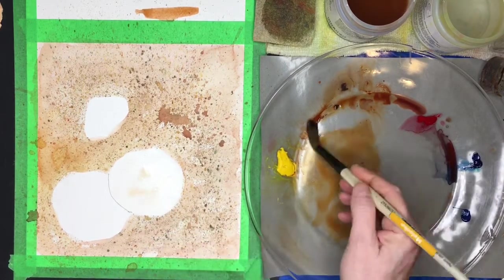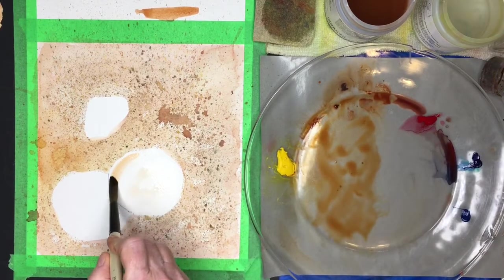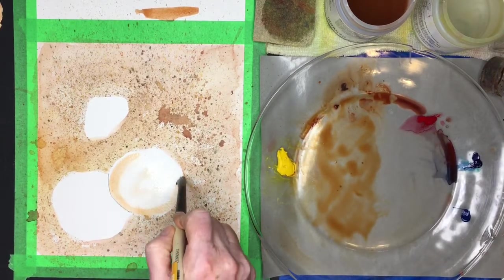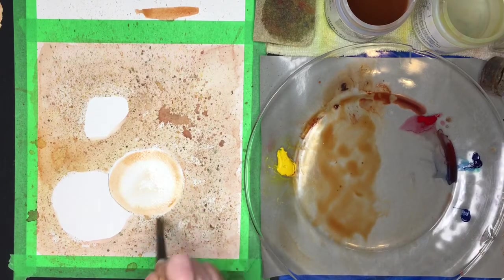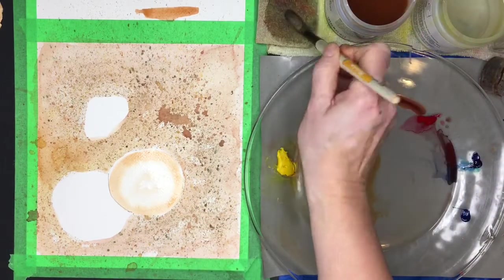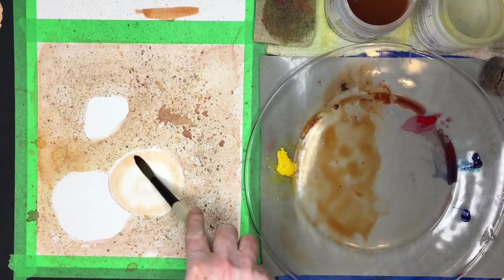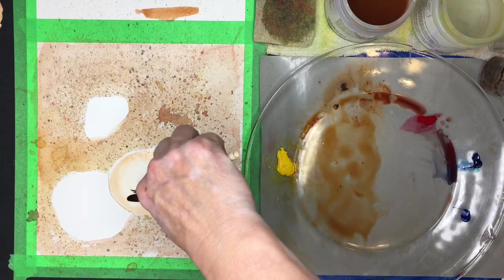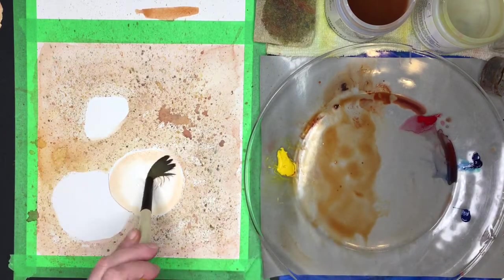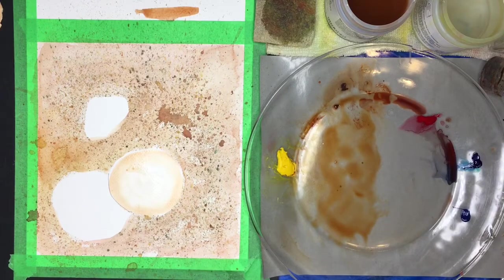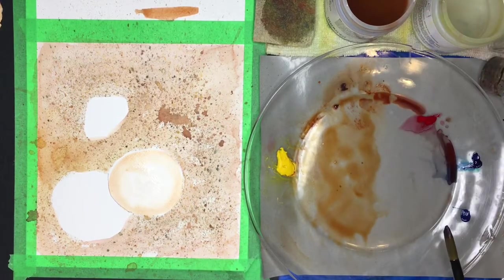So I'm gonna pick up this color and I'm gonna put it all around the sand dollar like this. Got it. Clean my brush, come back and kind of dry it. Got it. So you see it's already looking round.